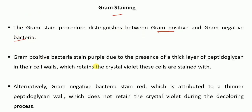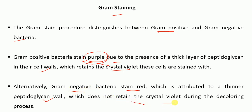Gram positive bacteria are stained purple due to the presence of a thick layer of peptidoglycan in their cell walls, and hence they can retain the crystal violet. Whereas gram negative bacteria, they are stained red, which is due to the presence of a thinner peptidoglycan wall and hence they cannot retain the crystal violet during the decoloring process.